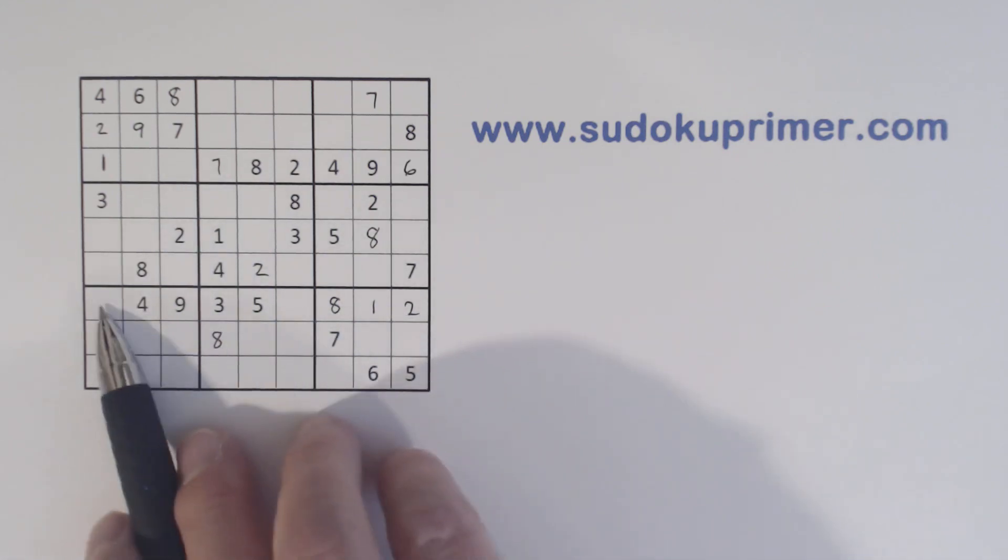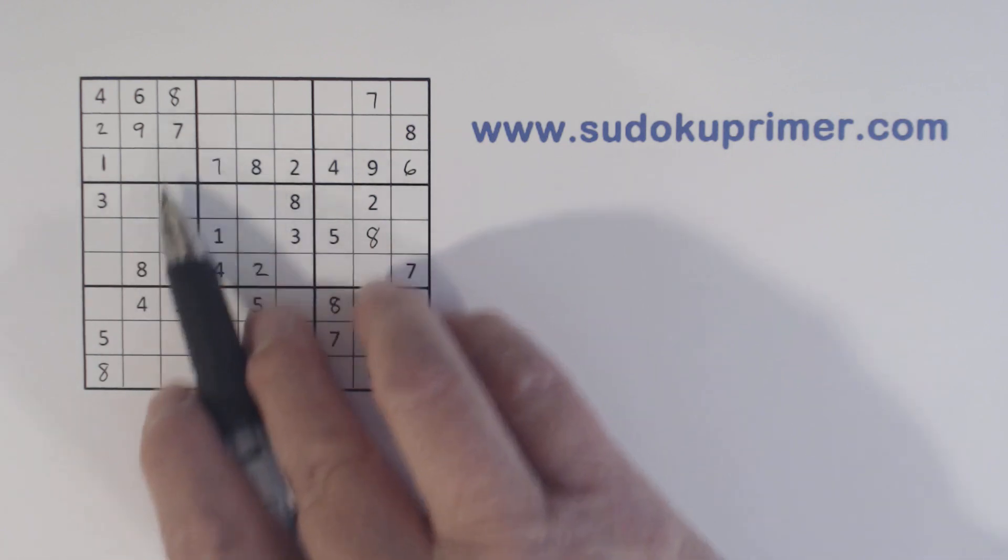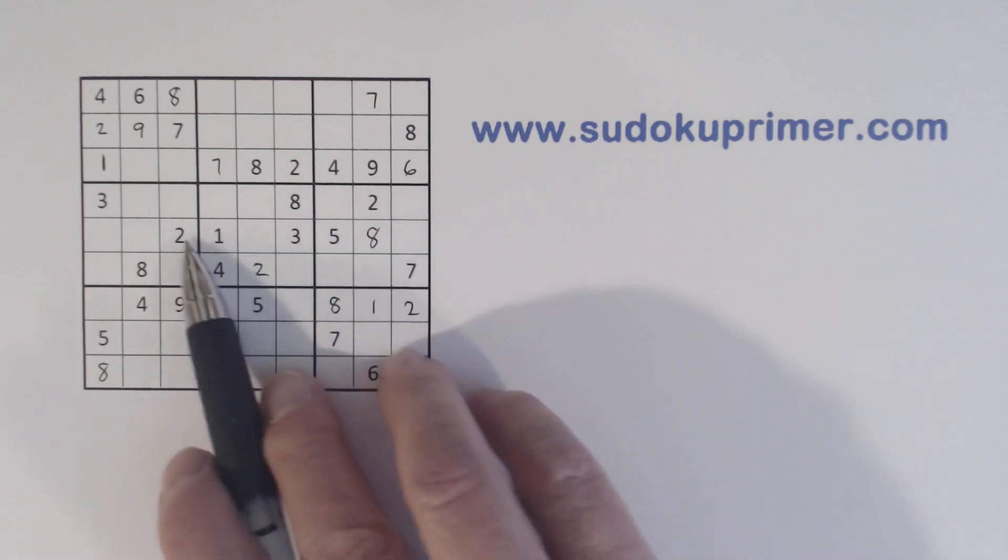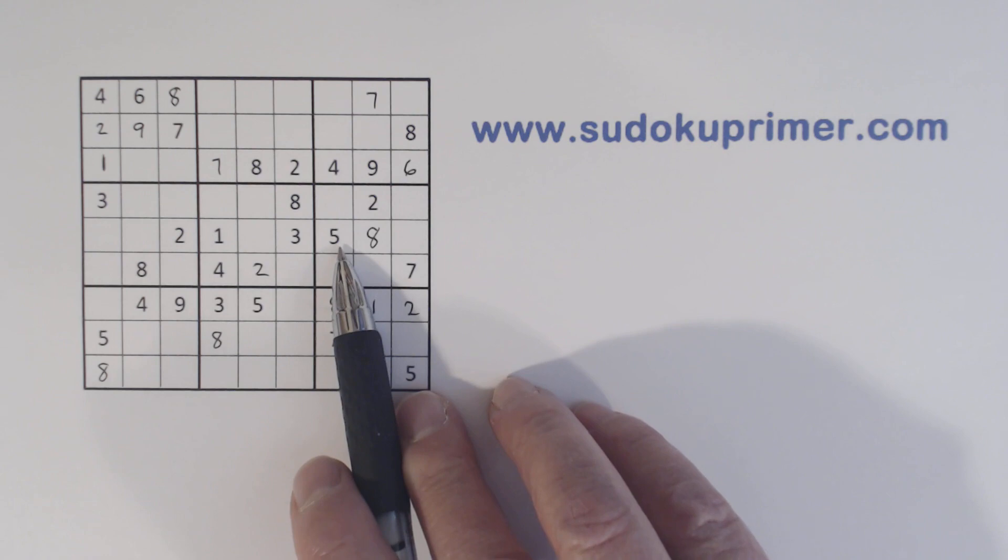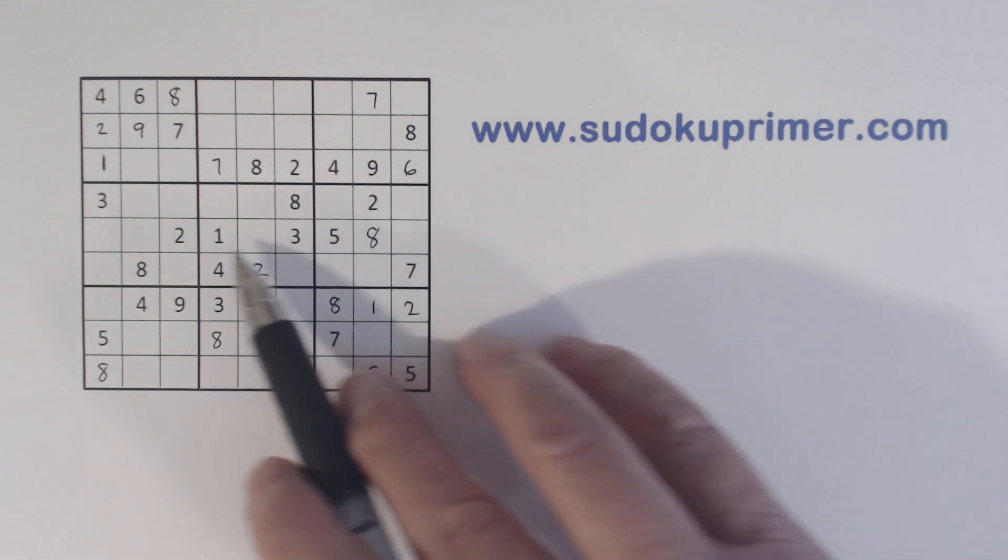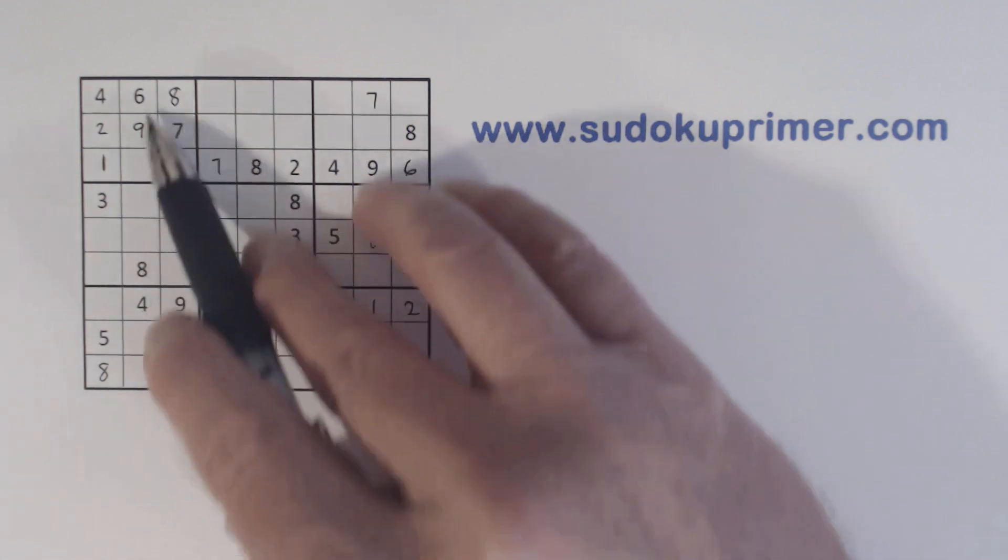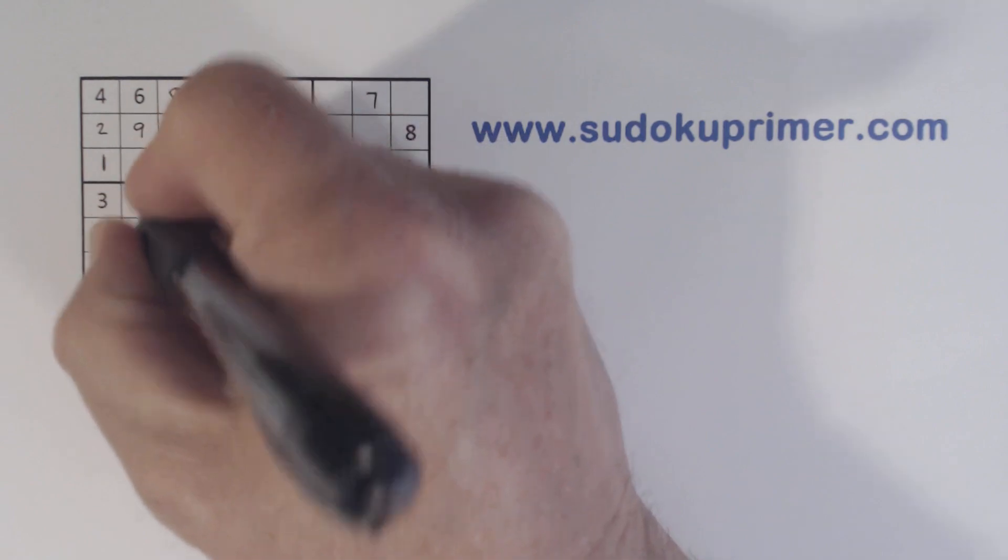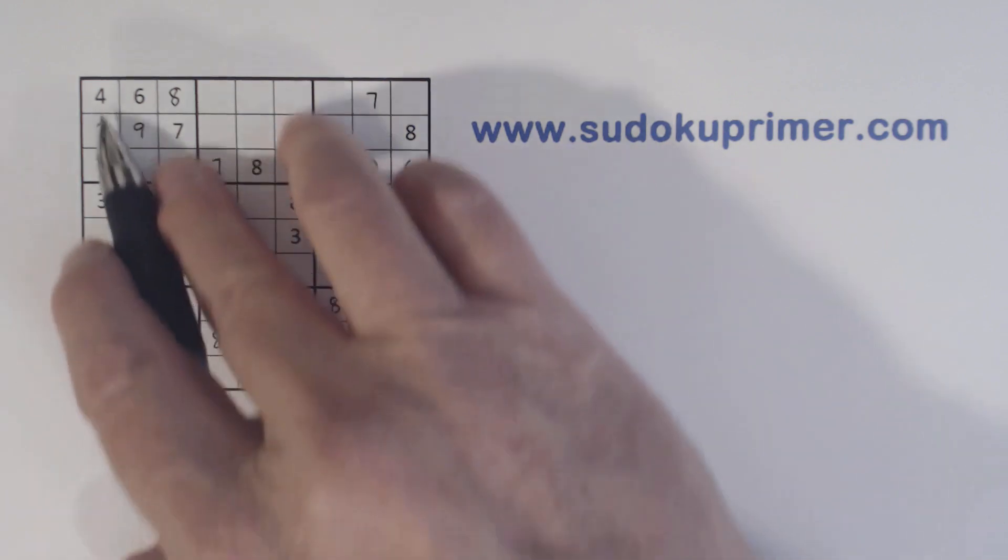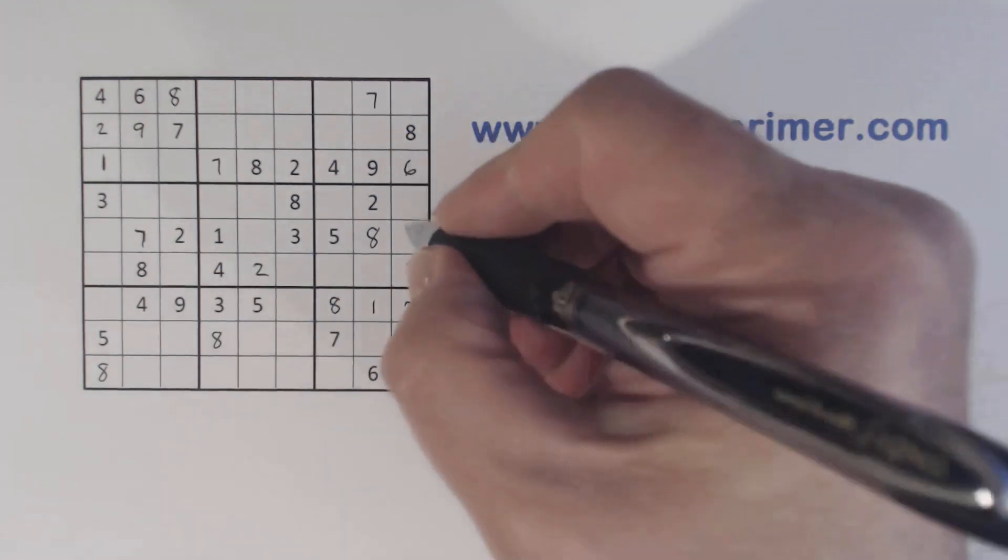Here we're missing a six and a seven, we can't solve those yet. Let's look at this row right here. We're missing one, two, three, four, six, seven, nine. So that's a four or a nine. Six, seven, or nine. Here's a four, six, and a nine, so that's a seven right there. So that's a six or a nine, six or a nine, so that's a four right there.